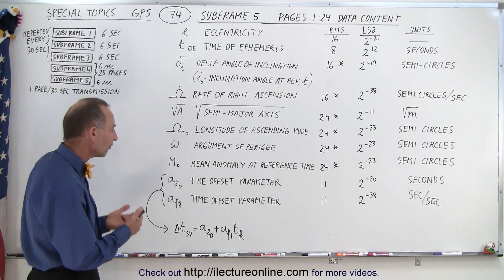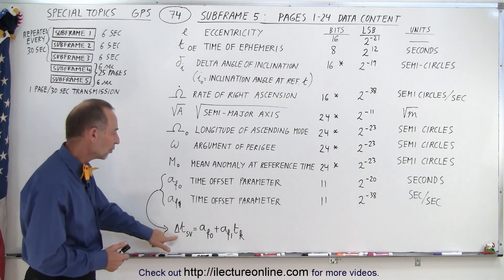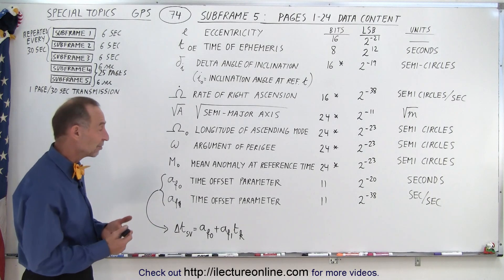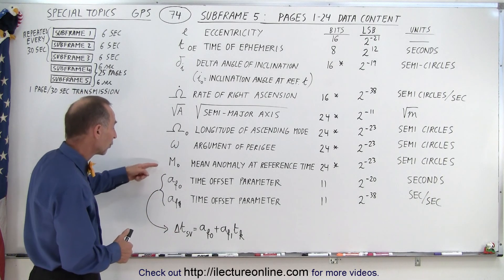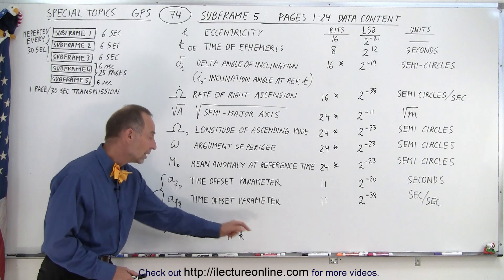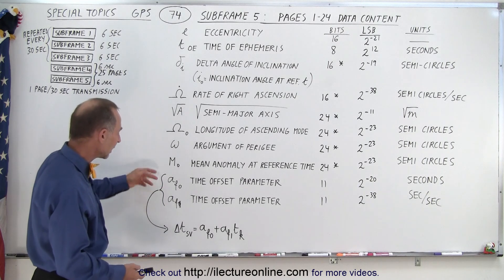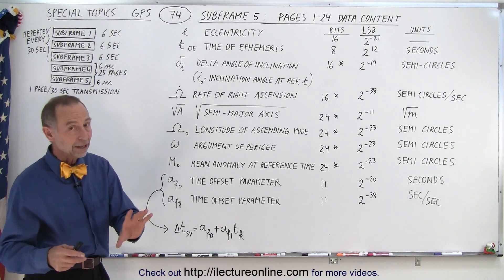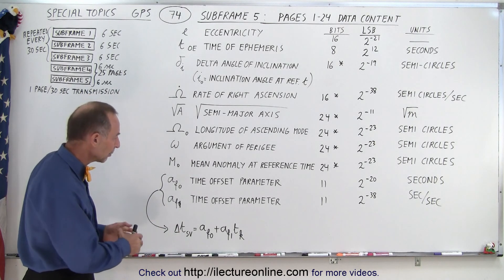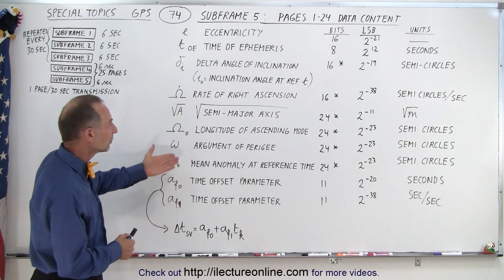Then we have two parameters — these two are what we call amplitude offset parameters — in order to calculate the SV time. Notice that this is a linear equation, which is not as accurate as the offset parameters we get with the ephemeris data, where we have a third term: the second-order power term, af2. That af2 in the ephemeris data is not included here. Again, the delta-t calculation based upon the almanac data and these two parameters is not going to be as accurate as the delta-tSV we get from the ephemeris data, but good enough for what we need.